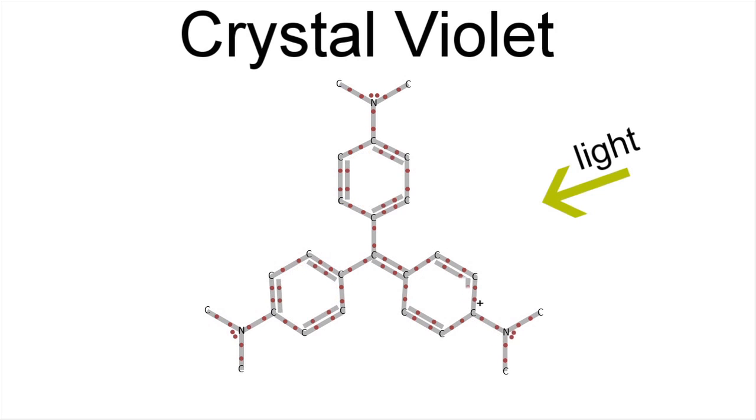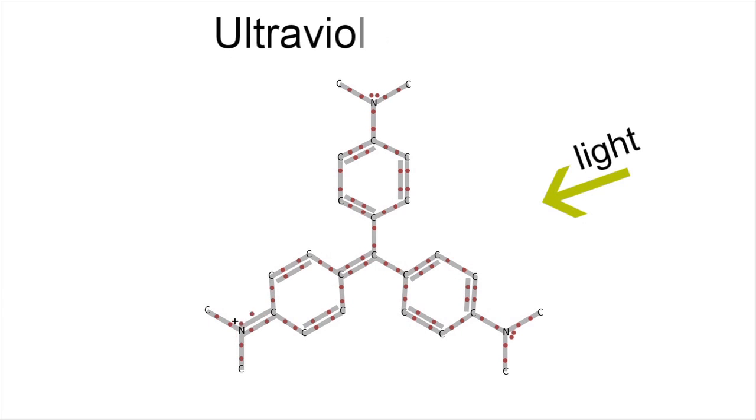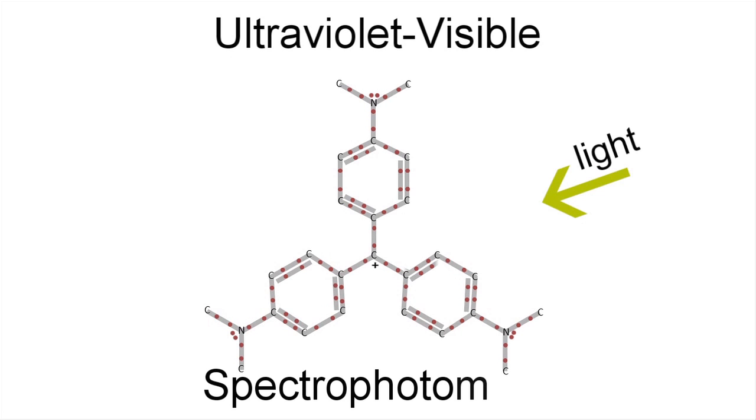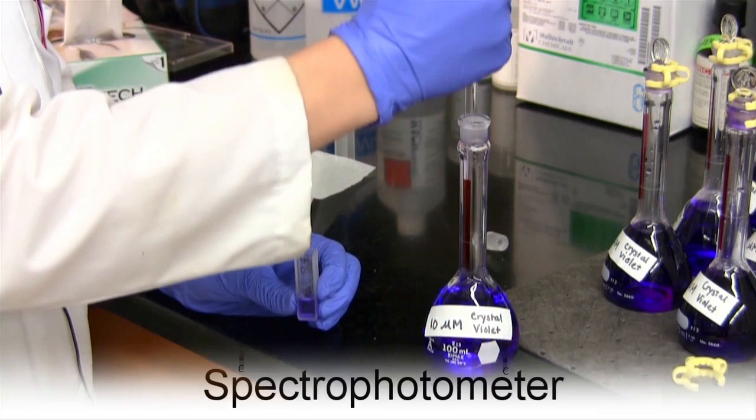But you don't have to take my word for it. We can actually measure how crystal violet absorbs light in the laboratory using an instrument called an ultraviolet visible spectrophotometer. So let's do that.